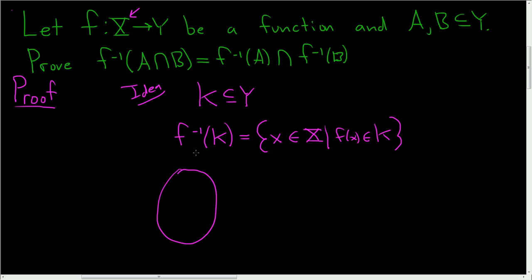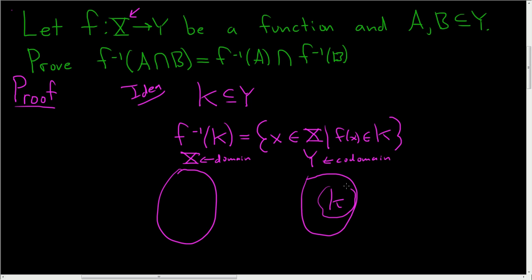Let's look at a picture. If this is capital X and this is capital Y, this is your domain and this is your codomain. Here's capital K — it's a subset of Y. The inverse image of K under F is the set of all of the X's in the domain that actually get mapped to K. If X is in the inverse image, X is in the domain and it gets sent to K, because F of X is in K.